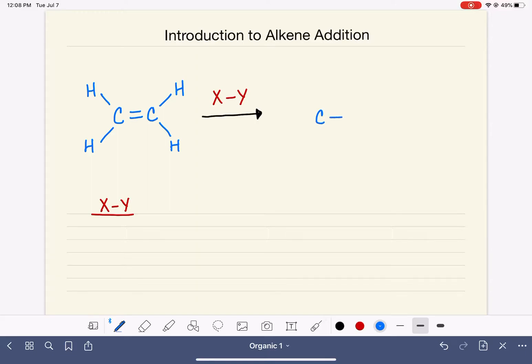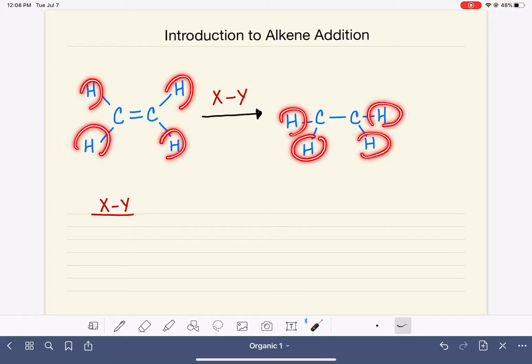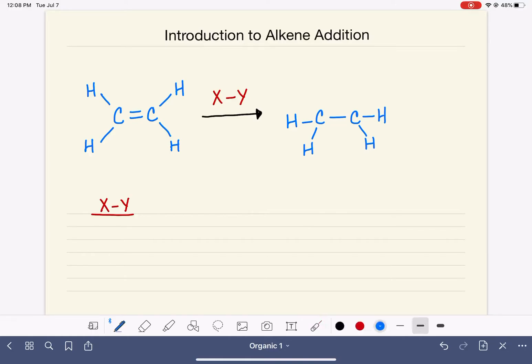In this addition reaction, the carbon-carbon double bond is converted to a carbon-carbon single bond. Whatever was attached to the alkene—in this case, the four hydrogen atoms—are left intact. They're still attached to their original carbons. The carbon-carbon double bond opens itself up, and the XY adds itself to the two carbons of the alkene. The name 'addition' makes sense because we are essentially adding this XY to the carbon-carbon double bond.